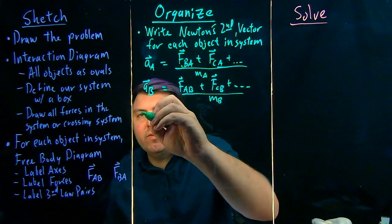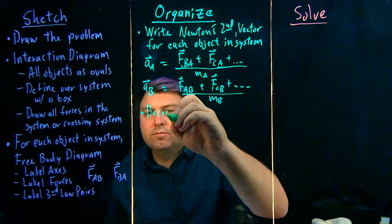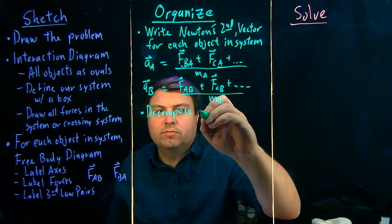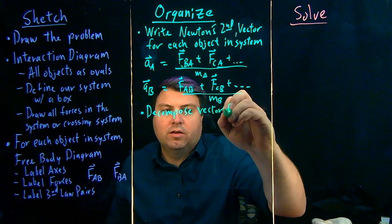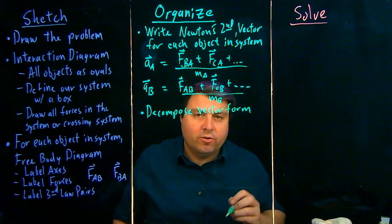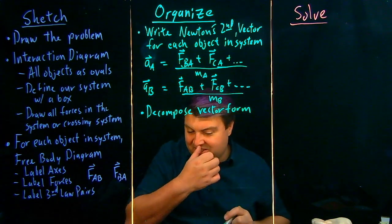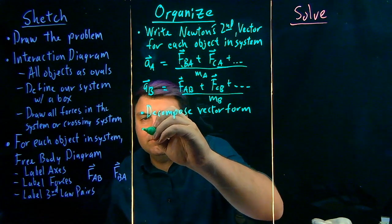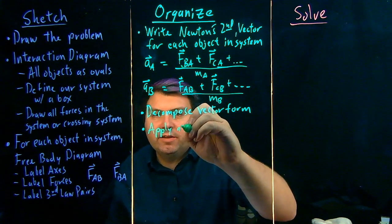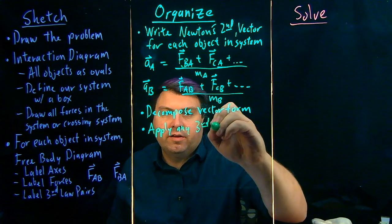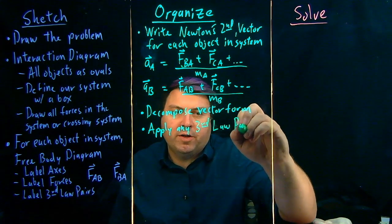Once we have this, we want to then decompose our vector form into whatever convenient equations there are. And then we want to apply the third law pairs.